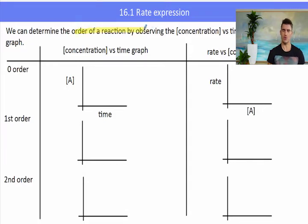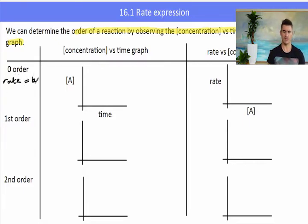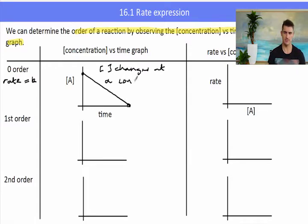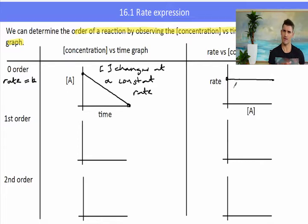Now let's look at the graphs. We can determine the order of a reaction by observing either the concentration-time graph or the rate-concentration graph. For a zero order reaction, the rate is equal to the rate constant, meaning the concentration changes at the same rate every second — giving a straight-line linear graph. The gradient does not change. On a rate versus concentration graph, because the rate remains steady, it is just a flat line.